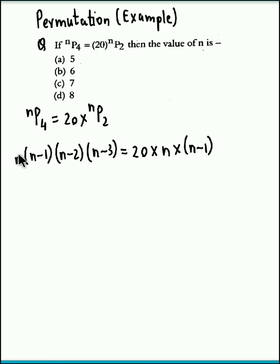If you observe on both sides, n could be cancelled out, the same factor on both sides, and n minus 1, even this could be cancelled out on both the sides. We are left with n minus 2 into n minus 3 on the left, and on the right-hand side we have 20. 20 could be expressed as 5 into 4.